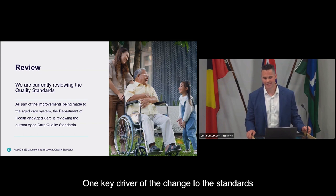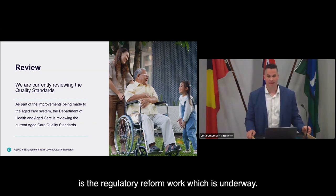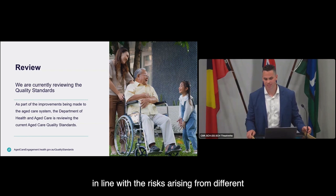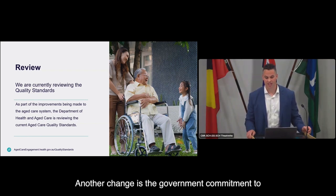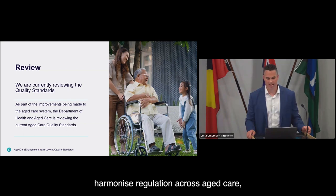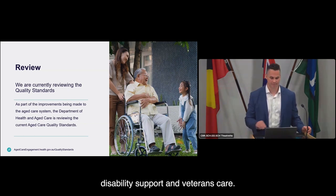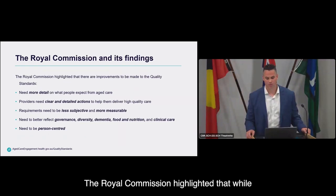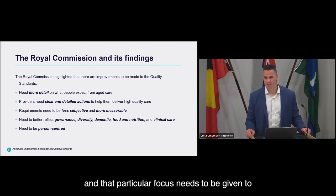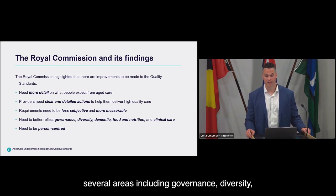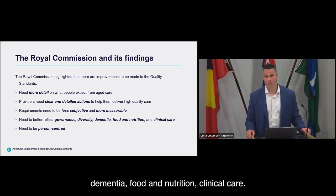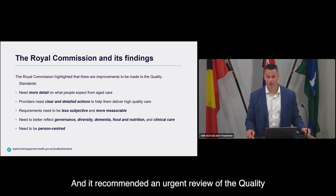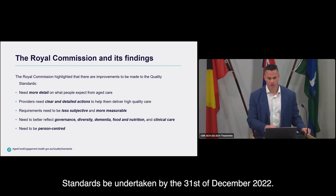One key driver is the regulatory reform work underway, which contemplates a registration system for providers that better differentiates regulation in line with risks from different types of care. Another change is the government commitment to harmonise regulation across aged care, disability support and veterans care. The Royal Commission highlighted that while standards are a powerful tool, they are not sufficiently comprehensive, rigorous or detailed, with particular focus needed on governance, diversity, dementia, food and nutrition, and clinical care. It recommended an urgent review of the quality standards by the 31st of December 2022.